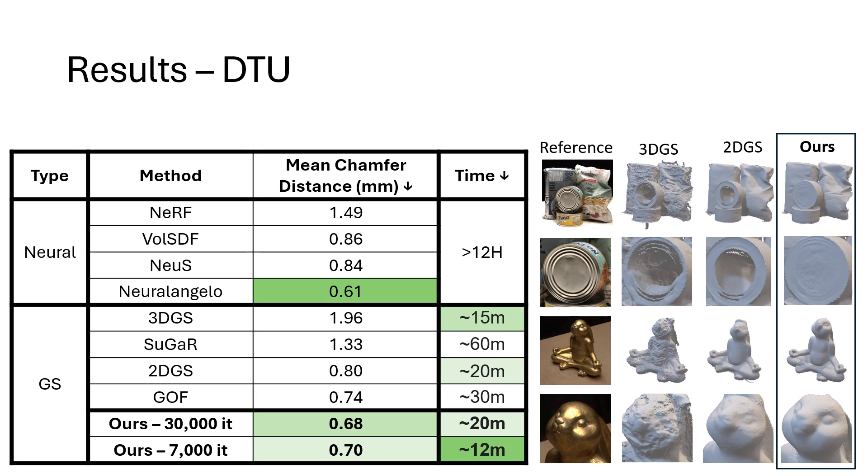In the examples shown, we can see that our method even manages to deal with reflective surfaces, while other Gaussian Splatting-based methods struggle to do so.